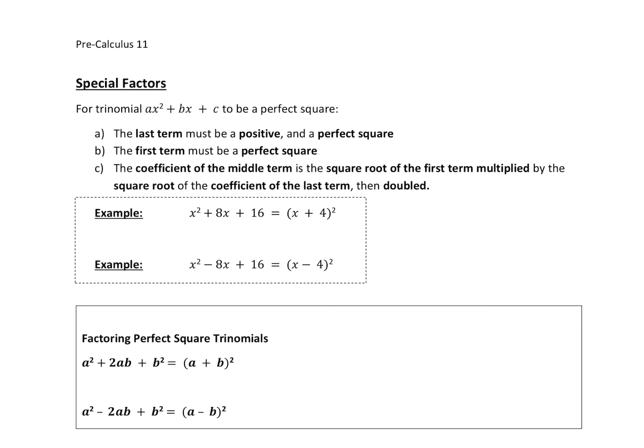Now let's go over special factors. If the last term is positive and this term is positive, then this is going to be positive. If this is positive and this is negative, then this has to be negative. The key check is: is the middle term 2 times the square root of the last term? If it is, it's a perfect square trinomial. You'll see: negative 4 times 2 gives the middle, negative 4 squared gives the last; positive 4 times 2 and 4 squared — that's how we get perfect square trinomials.